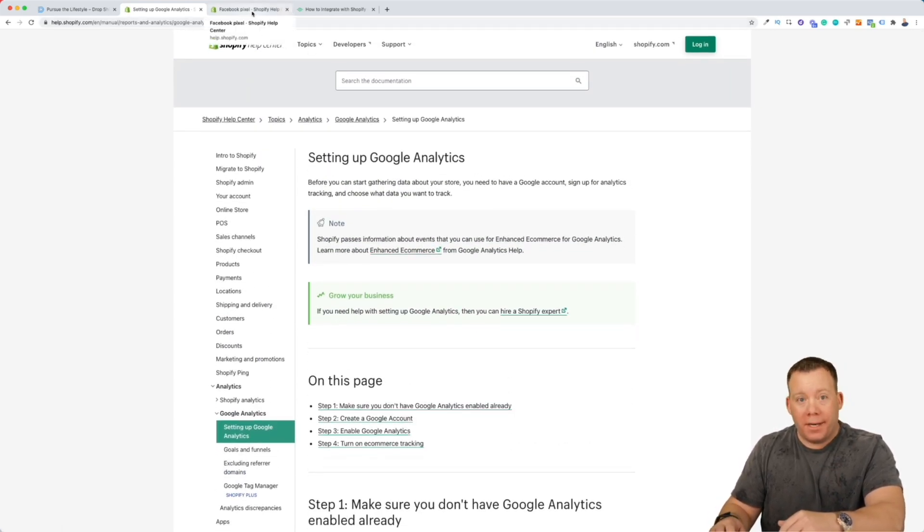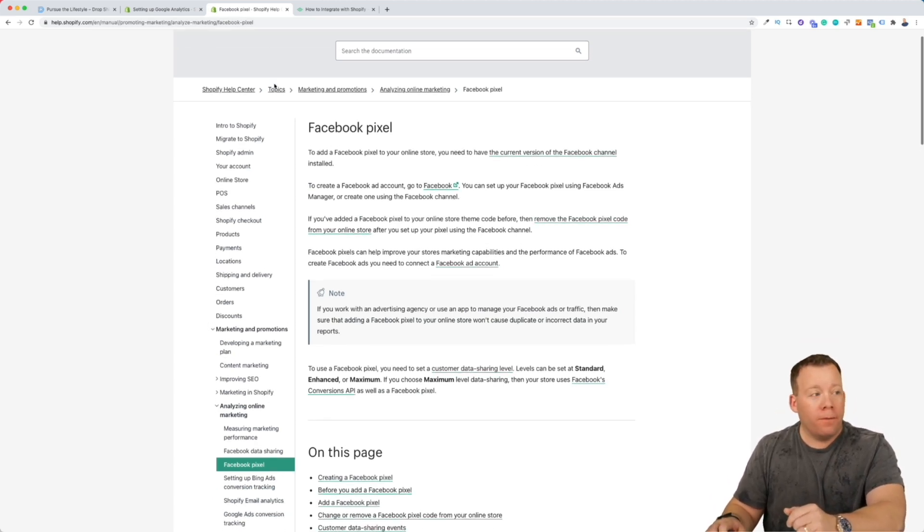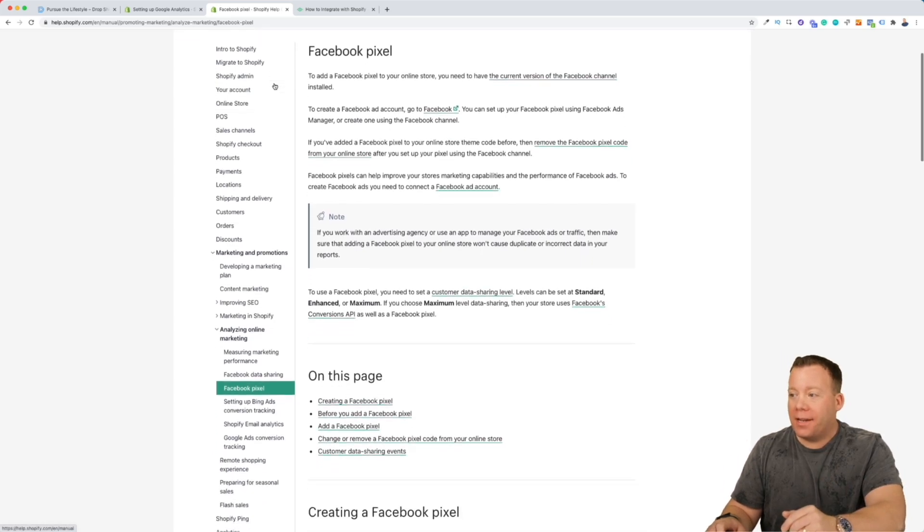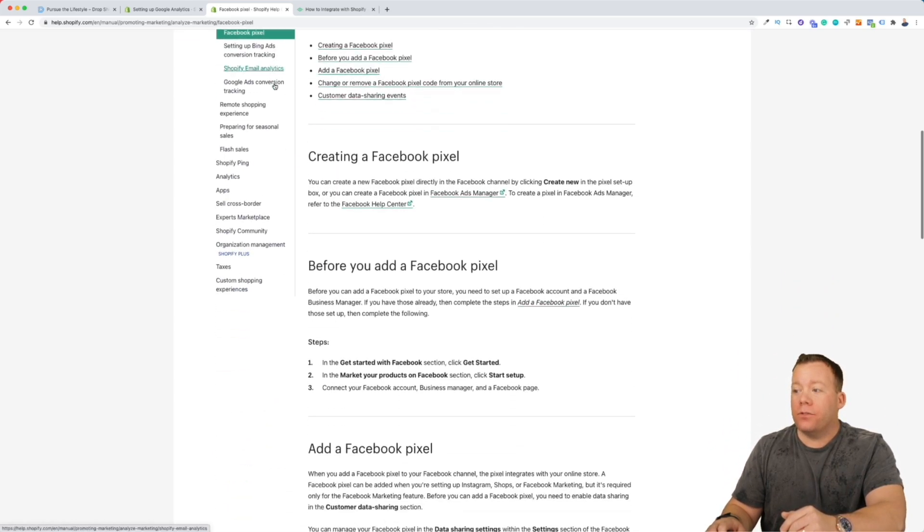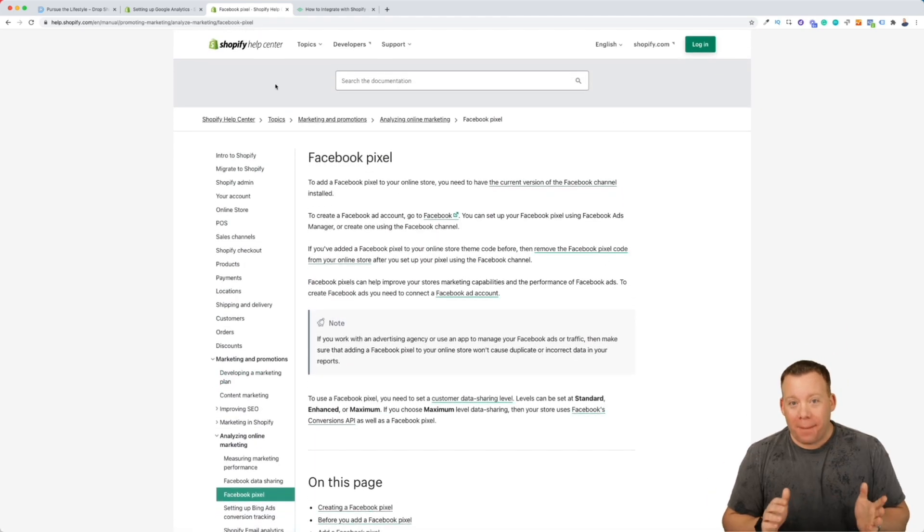And the other thing you'll wanna do to have the frameworks in place so you can follow along with the rest of this video is make sure you have the Facebook pixel installed on your Shopify store. Again, I'm not gonna walk through how to do that. I am just gonna link here to Shopify's documentation on exactly how to do that. So with that being said, let's go ahead and jump into what you should actually do when you have the Facebook pixel installed on your store, when you have Google Analytics installed on your store, and when you have Klaviyo installed on your store.